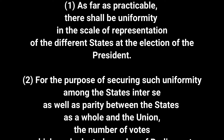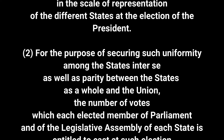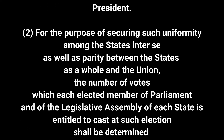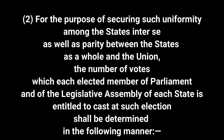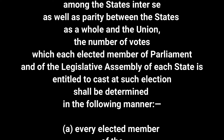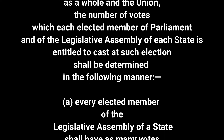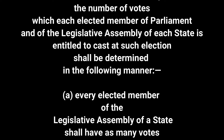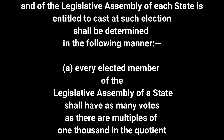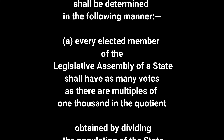Clause 2: For the purpose of securing such uniformity among the states inter se, as well as parity between the states as a whole and the Union, the number of votes which each elected member of Parliament and of the Legislative Assembly of each state is entitled to cast at such election shall be determined in the following manner.